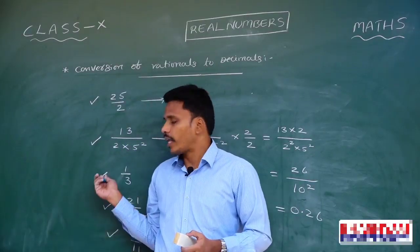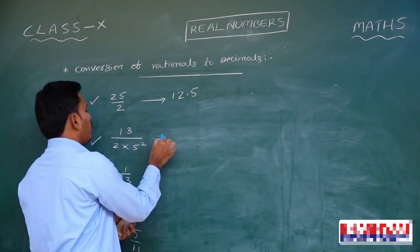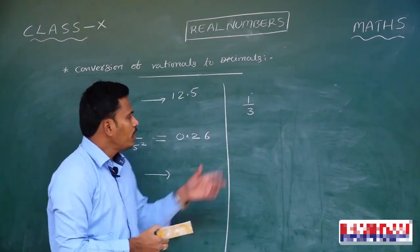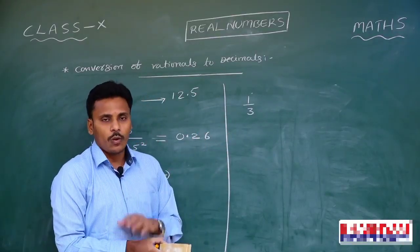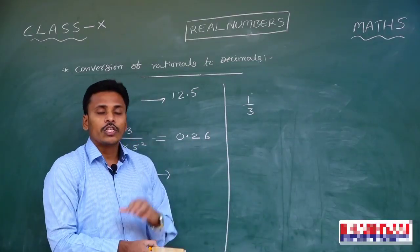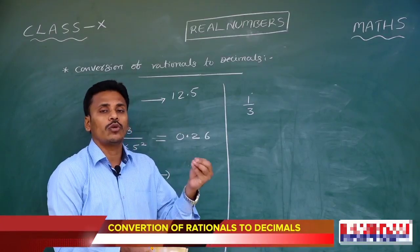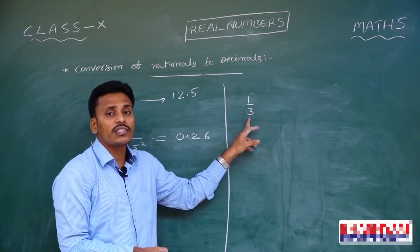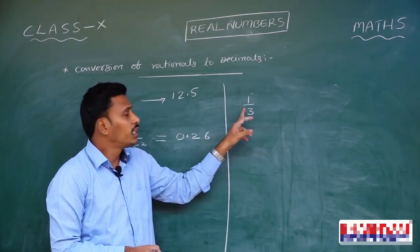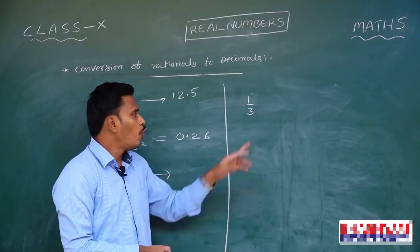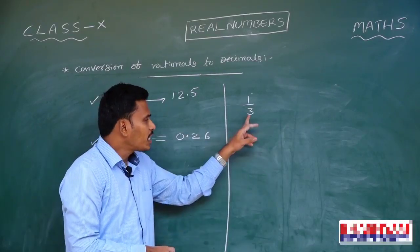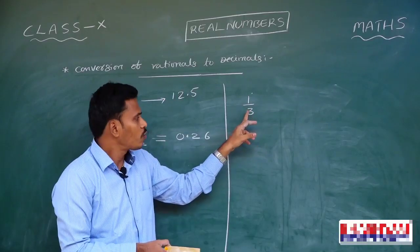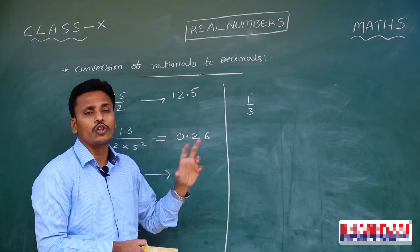Now coming to the third example: it is 1 by 3. To convert into decimal without division, we need to get powers of 10 in the denominator. But the denominator is just 3. It is not possible to make 3 into a power of 10 — multiply 3 by any number you choose and you will not get a power of 10. Since the denominator contains no 2s and no 5s, it is not possible to convert this 1 by 3 into decimal without using the division process.